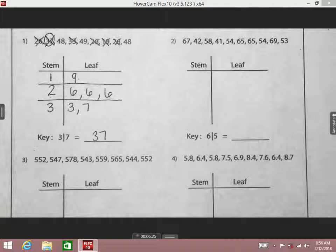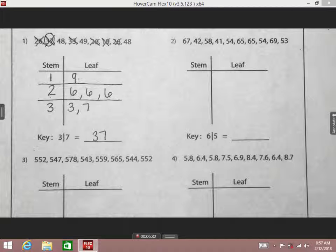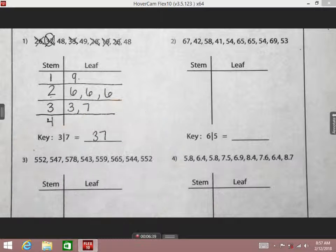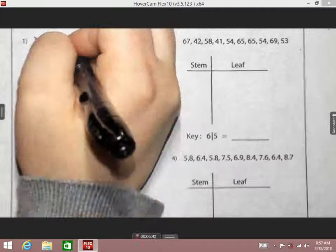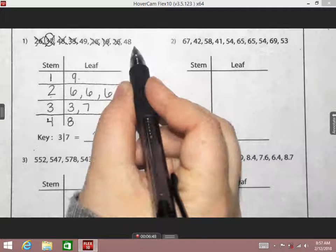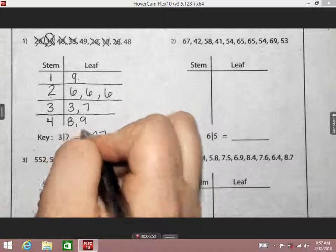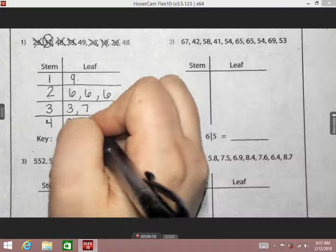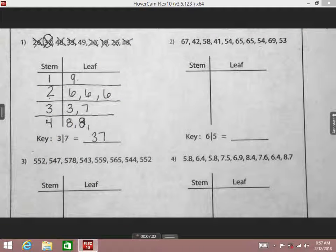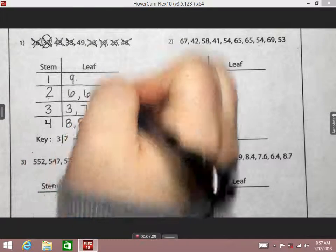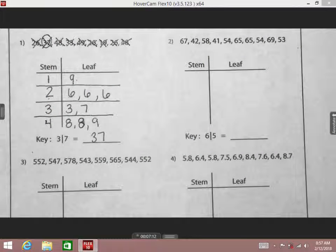Is that the only number that needs a two for the stem? No. What else do we have in there? We have another twenty-six. So I'm just going to do comma. Do I have to write another two? No. We already have the two, guys. I can just put comma and put another six. What's the next number going to be? Thirty-three. So what kind of stem do I need for that? Three. And then my leaf there is also going to be? A three.